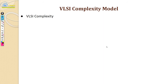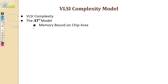Next is VLSI complexity. We have something called the AT² model. VLSI stands for Very Large Scale Integration. This is a revolution in the IC industry — chip manufacturing. We built the technology to manufacture large scale integrated circuits, meaning millions of transistors on one chip, and you can fabricate millions of chips in a very short span. This revolution started in the late 80s and continues till today. When you have the actual VLSI — the physical chip — there are some constraints, and this constraint is modeled by the AT² model.